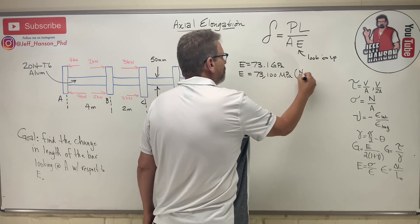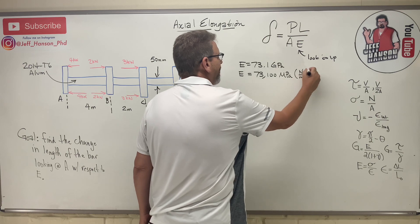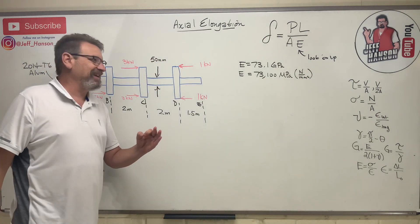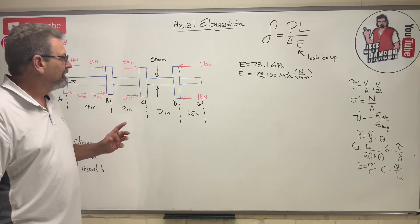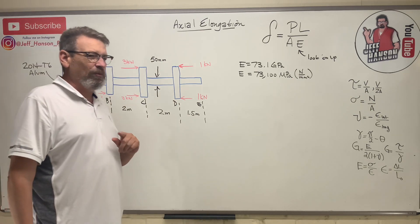So E equals 73.1 gigapascals, or we can say 73,100 megapascals, which is Newtons over millimeters squared. If I have everything in the exact same units, it's easier for me to just cancel things out.